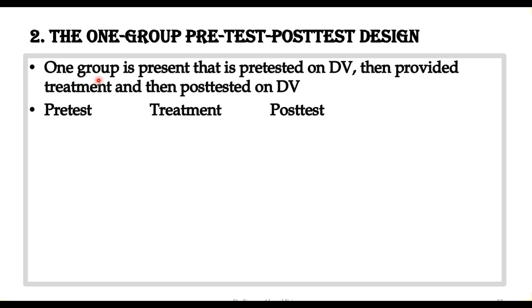There is one group present here and that is the experimental group. That experimental group is first of all pre-tested on the dependent variable, which means we find the variables before the treatment. Then we give them the treatment, then we take the post-test, and from the result of the post-test we can find the effect of the treatment. Symbolically, we start with the pre-test, then we go towards the treatment of the group, and then we take the post-test.